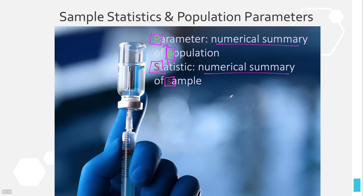A parameter — note that parameter and population both start with the letter P. A parameter is a numerical summary of the population. A statistic is also a numerical summary, but it goes with the sample. Statistic and sample go together.